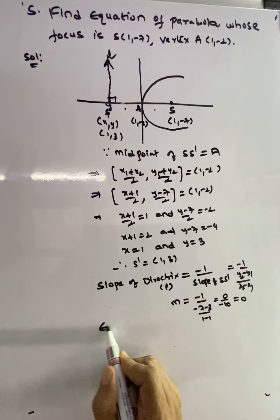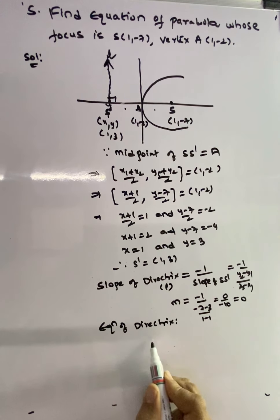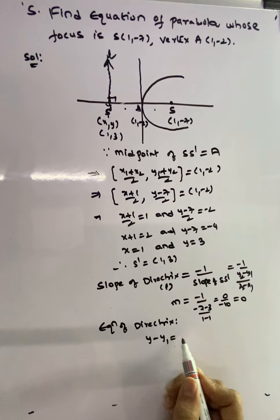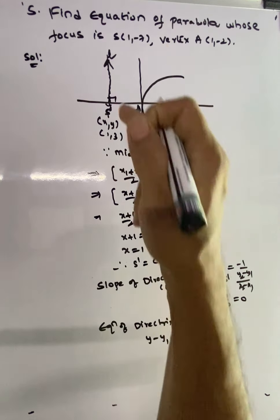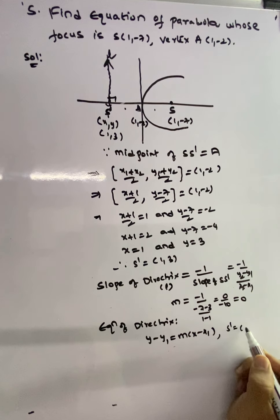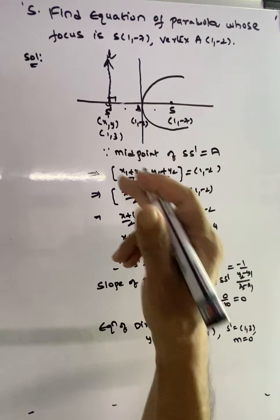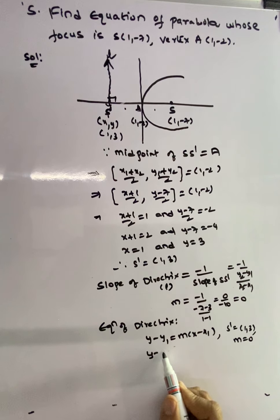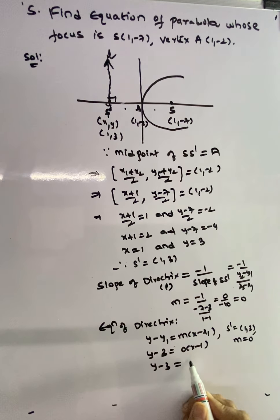Now we find the equation of the directrix using Y - Y1 = M(X - X1). The directrix passes through S' = (1, 3) with slope M = 0. Substituting: Y - 3 = 0, so the directrix equation is Y - 3 = 0, or Y = 3.